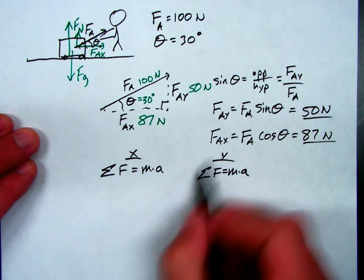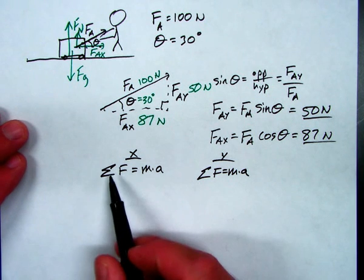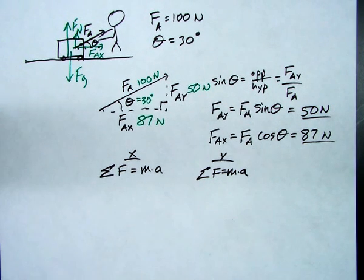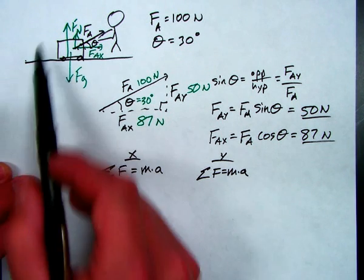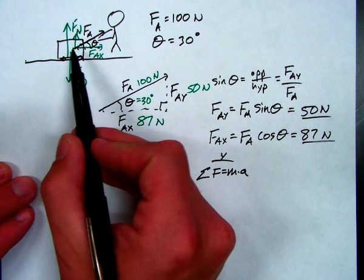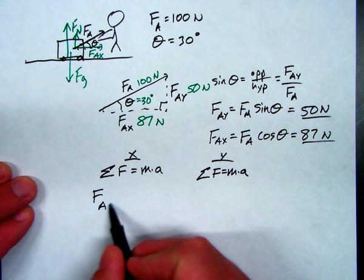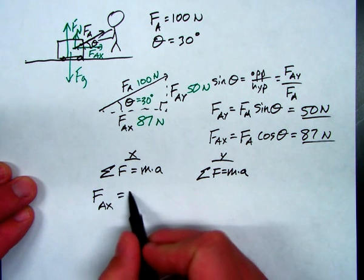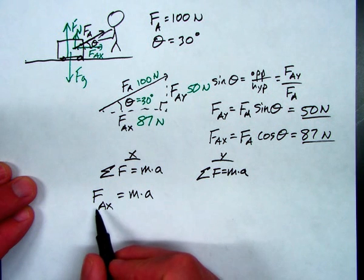Things in the Y direction don't see things in the X direction, so the X forces are separate from Y forces. So, the sum of the forces in the X direction, in this problem, I did not include friction. We'll do that next time. So, there's only one force in the X direction. That force is FAX, and that will equal mass times acceleration. I've solved for FAX.